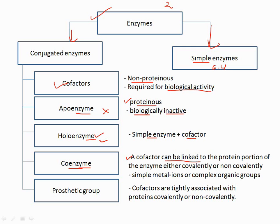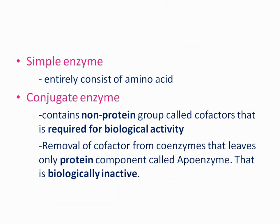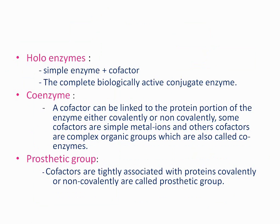The coenzyme is a cofactor that can be linked to the protein portion of the enzyme either covalently or non-covalently, such as simple metal ions or complex organic groups. The prosthetic group is a cofactor that is tightly associated with the protein, either covalently or non-covalently — this is called the prosthetic group.